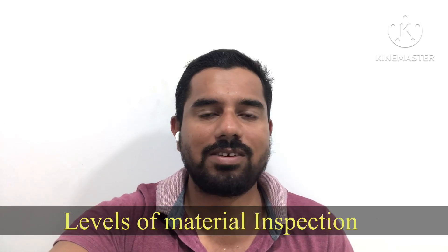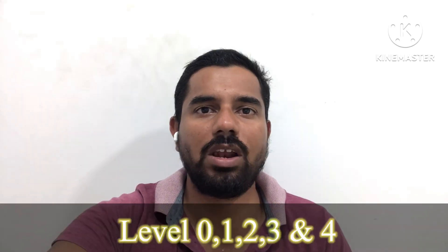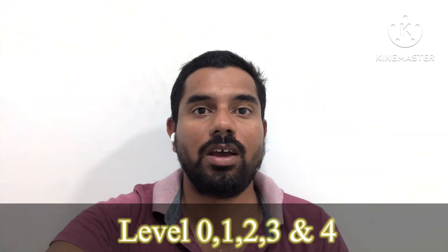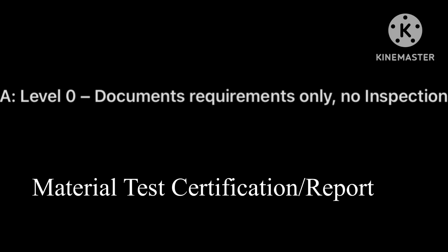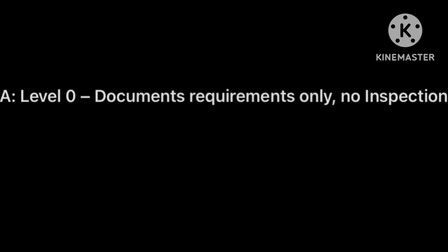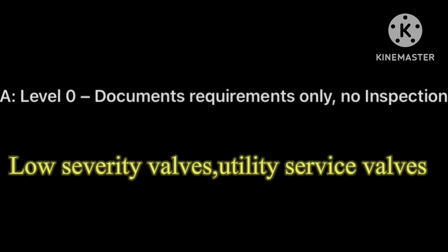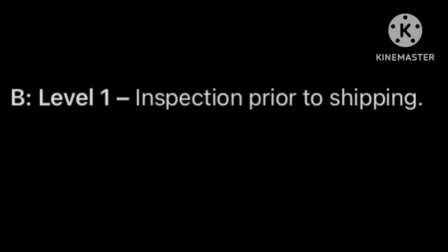There are five levels of metal inspection: Level 0, Level 1, Level 2, Level 3, and Level 4. Level 0 inspection covers document requirements only — no vendor inspection is required. Items like low-severity utility service valves, cast iron valves, brass materials, and butterfly valves all fall under this Level 0 category.